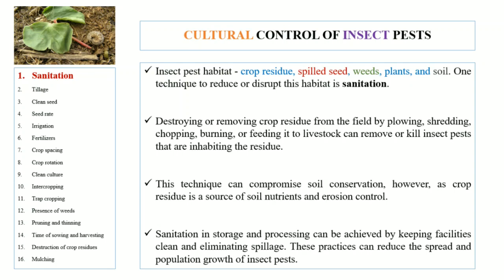Keeping facilities clean and eliminating the spillage or leakage of liquid can effectively reduce the chances of insect pest infestation. These practices can reduce the spread and population growth of insect pests in stored grain settings.